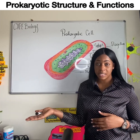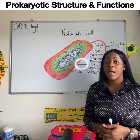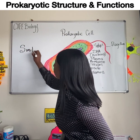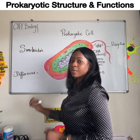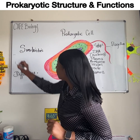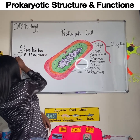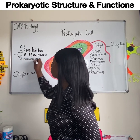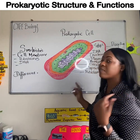Let's compare the eukaryotic cell with the prokaryotic cell. Starting with the similarities: both eukaryotic and prokaryotic cells possess the cell membrane, they both have ribosomes, they both have genetic material or DNA, and they both have a cytoplasm.